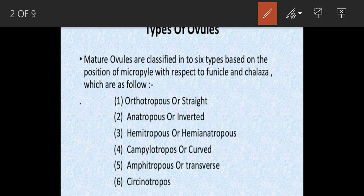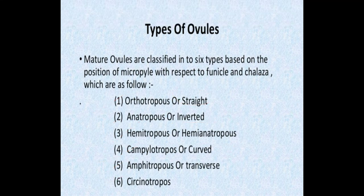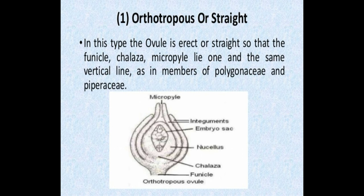The first type is orthotropous ovule, also called straight ovule. Second one is anatropous, or inverted — this is the most common type of ovule in angiosperms, found in more than eighty percent of flowering plants. Third is hemitropous, fourth is campylotropous or curved, fifth is amphitropous or transverse ovule, and sixth is the circinotropous ovule.